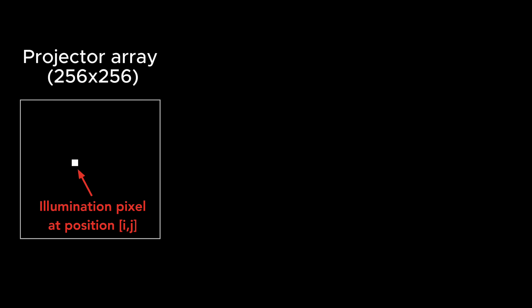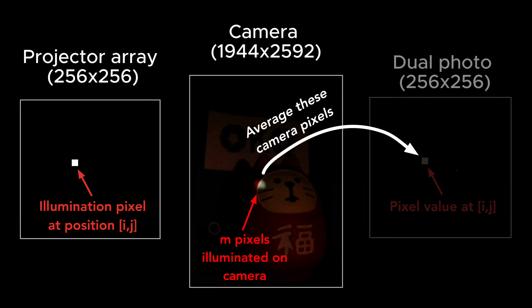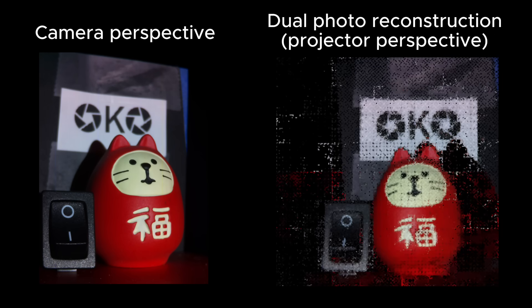Well, we actually already have all the information we need from the light transport. If an illumination pixel hits the scene and gets collected by the camera over n pixels, we know the signal over those n camera pixels corresponds to that one projector pixel. So all we have to do is average those camera pixels and store them in a new image. If we repeat the averaging procedure for every illumination pixel, we reconstruct an image from the perspective of the projector.